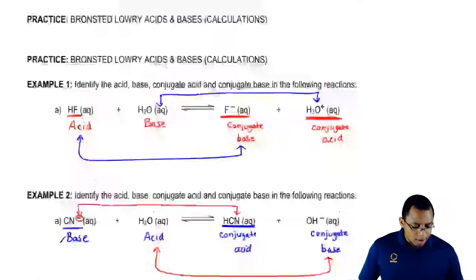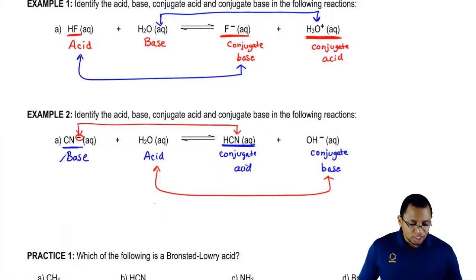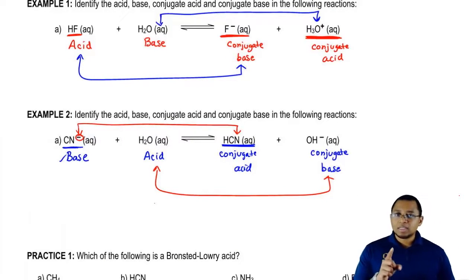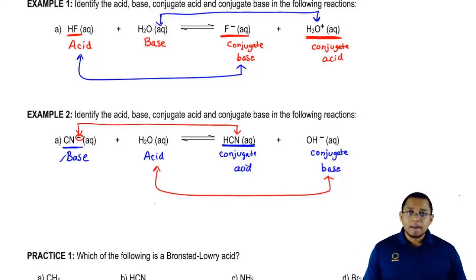And if we go back up to water actually, how do we know HF is the acid and H2O is the base? Because remember, they're both going to have H connected to an electronegative element. F and O are both in the same period. Remember, we said when you're in the same period, what do we look at? We look at electronegativity. So HF is definitely a stronger acid than H2O.